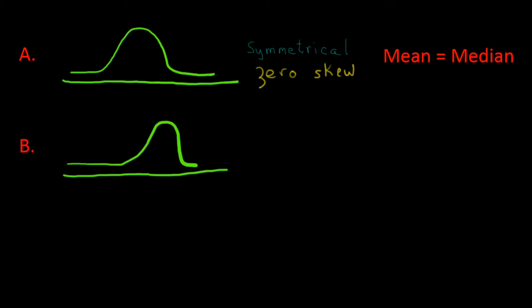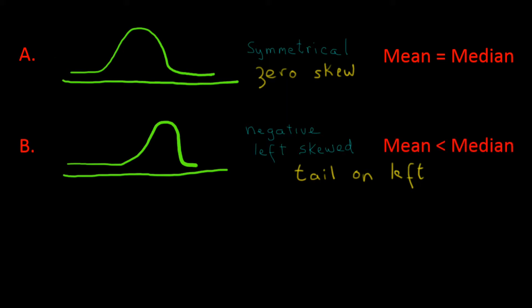Here is another graph that shows a skewed distribution. The tail is pulling out to the left, so this is called a negative or left skewed distribution. The tail on the left shows that there are extremely low values pulling the mean down. Imagine a group of test grades where most people score between 70 and 100, but there is one test score at the extremely low end — say a 20. That extremely low grade will pull the average or mean down, so when we have a negative or left skewed distribution, the mean will be lower or less than the median.